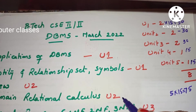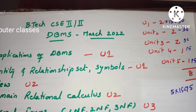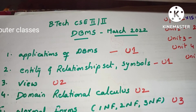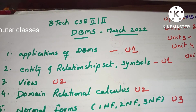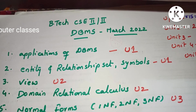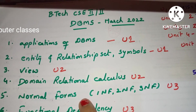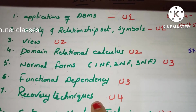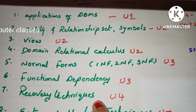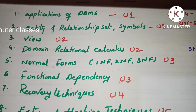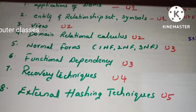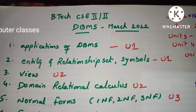In Unit 2, domain relational calculus, tuple relational calculus, and relational algebra — read these well. Views are a very, very important question. Normal forms — we compulsorily get a question. Recovery techniques and crash recovery — so many techniques are there. And hashing techniques — B trees, B plus trees. Read all these questions carefully.